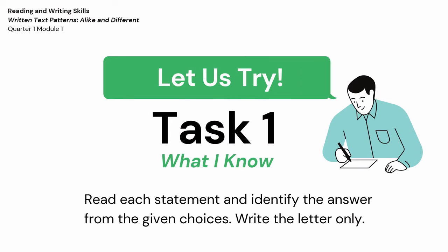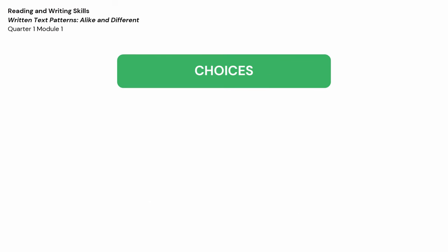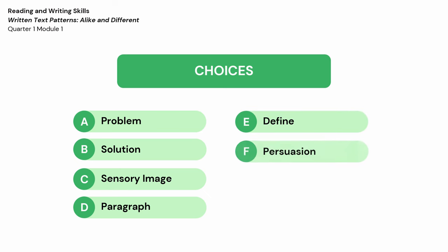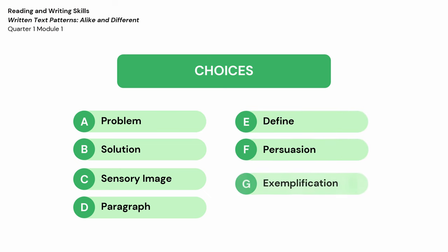Let us try Task 1, What I Know. Read each statement and identify the answer from the given choices. Write the letter only. Your choices are: Problem, Solution, Sensory image, Paragraph, Define, Persuasion, Exemplification, and Cause.